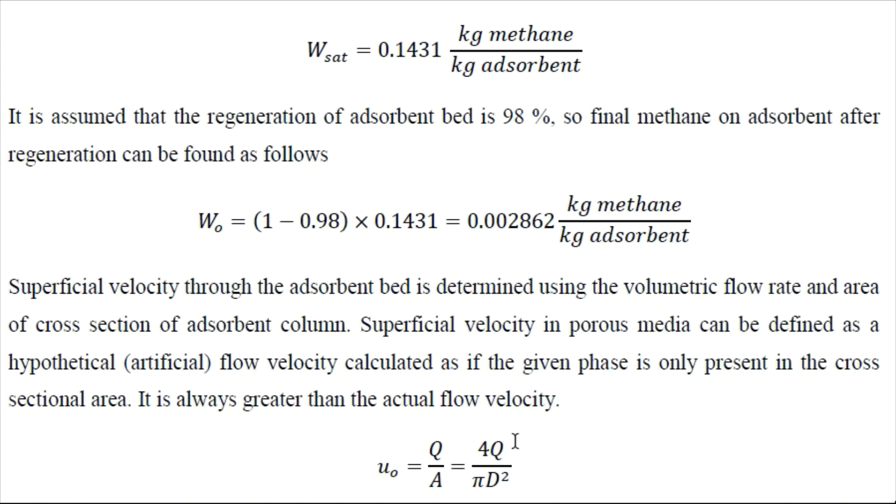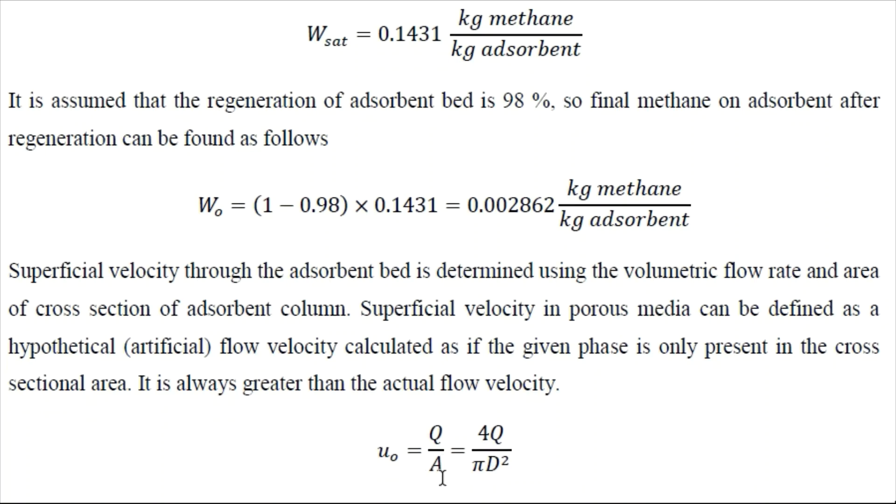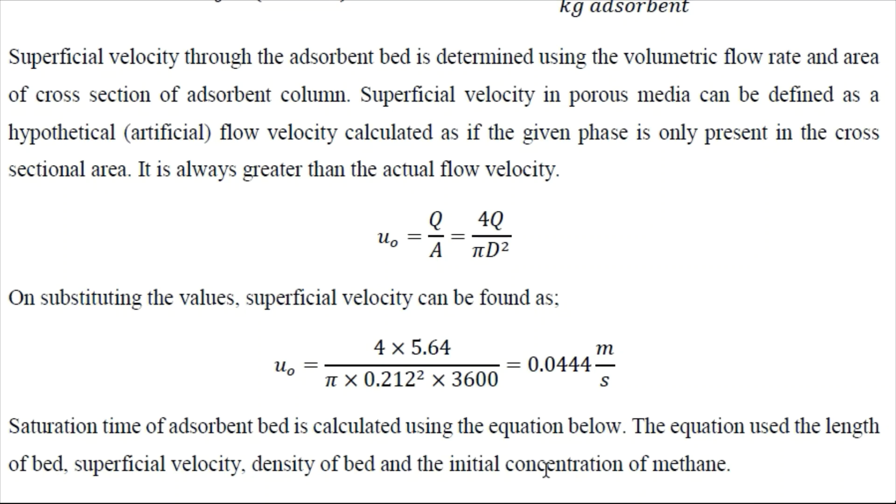Now we can determine the superficial velocity using the volumetric flow rate of the process stream and the diameter area of the column. So it is determined as 0.0444 meter per second.